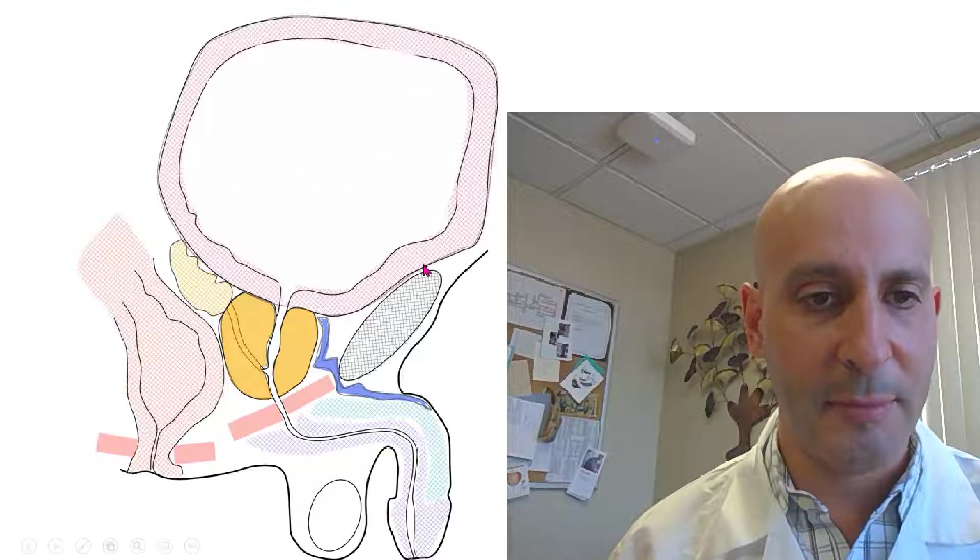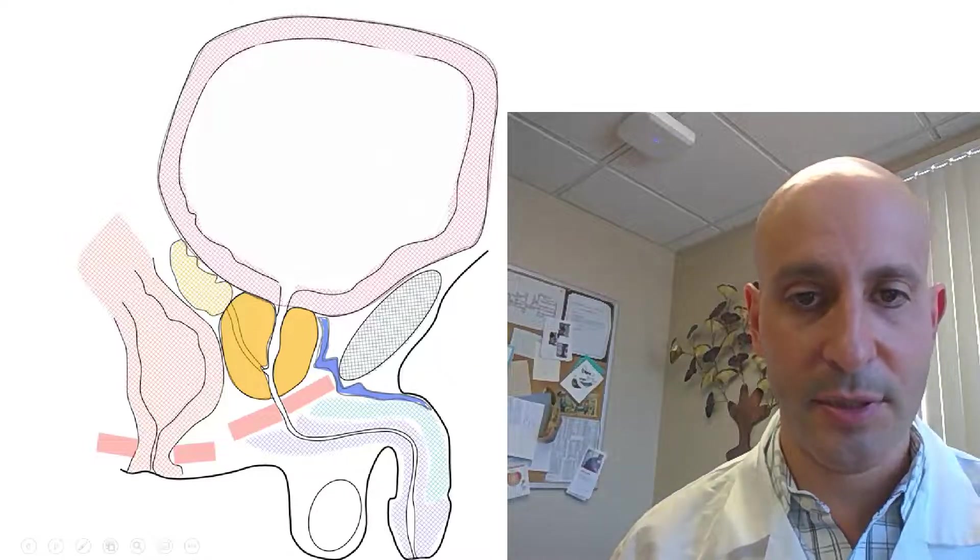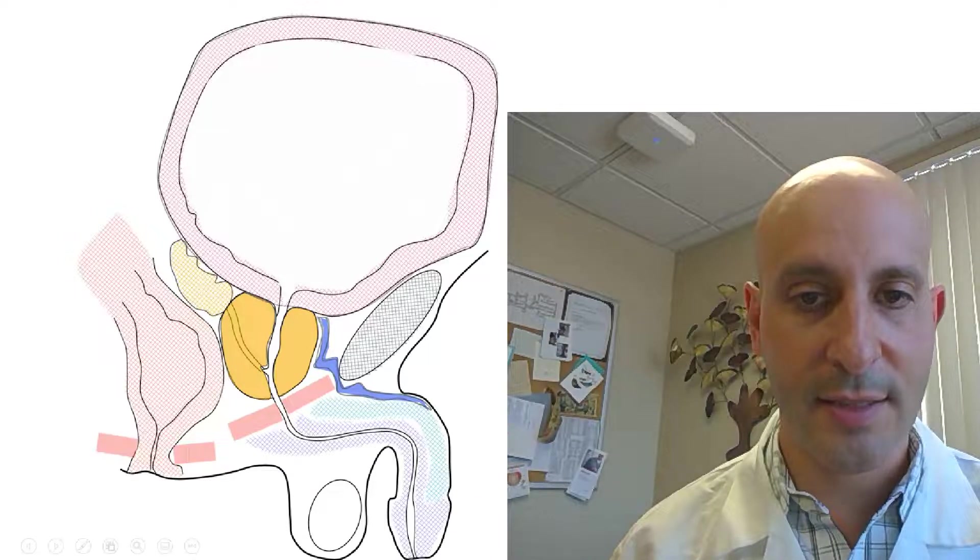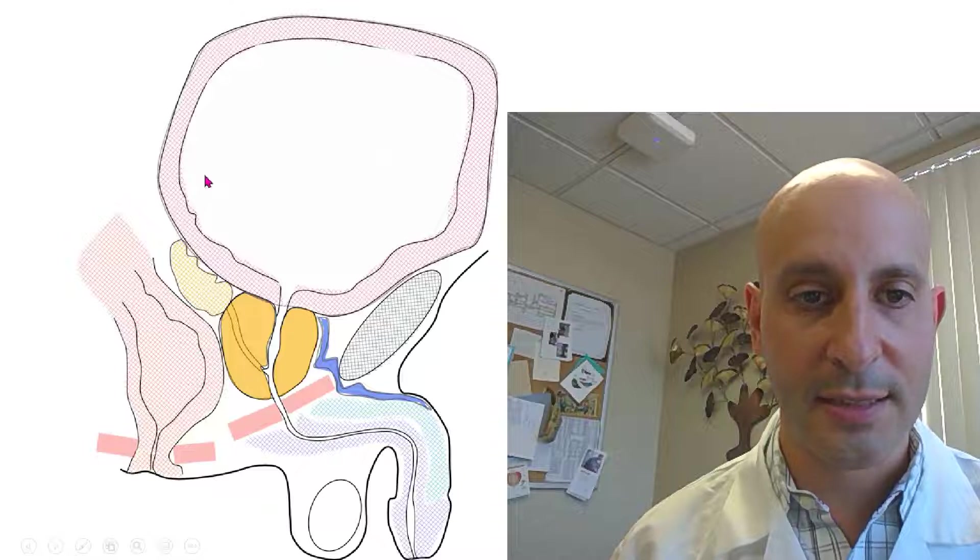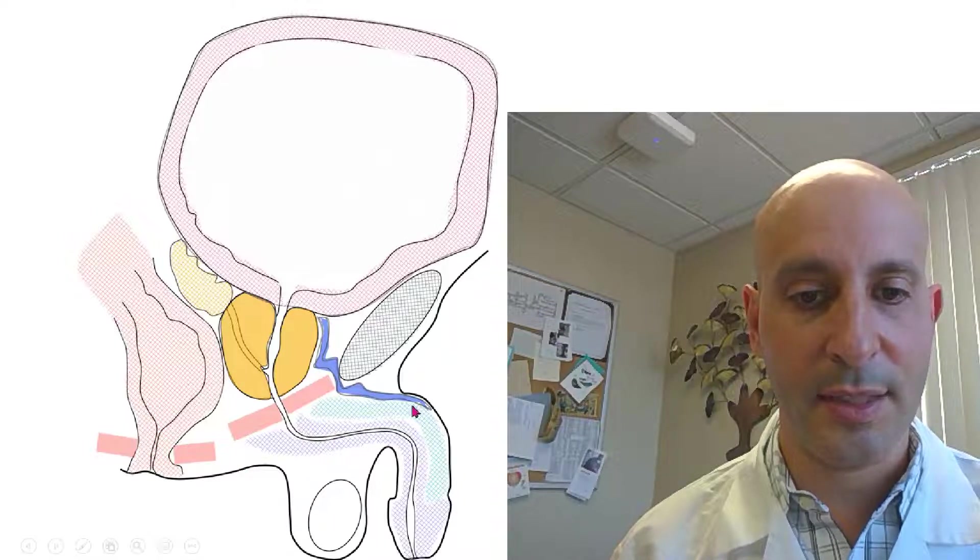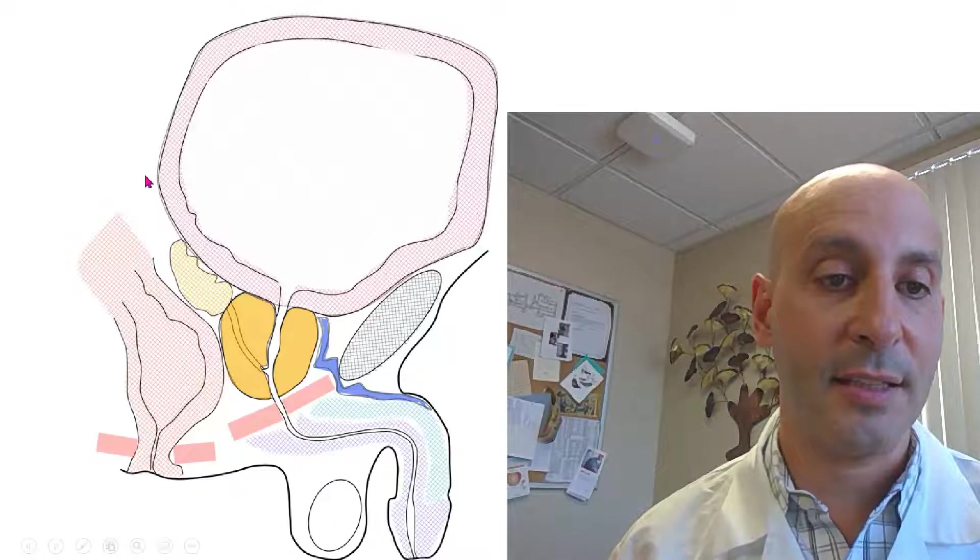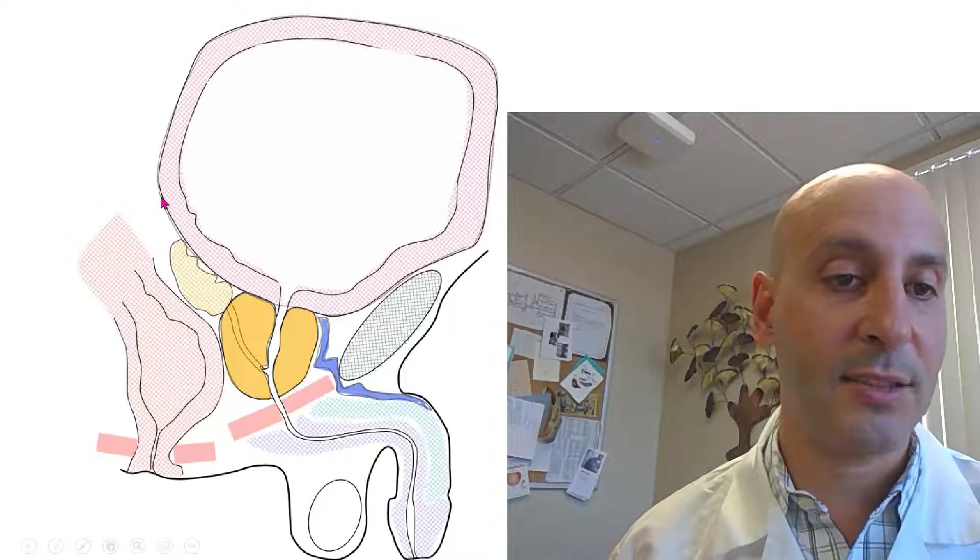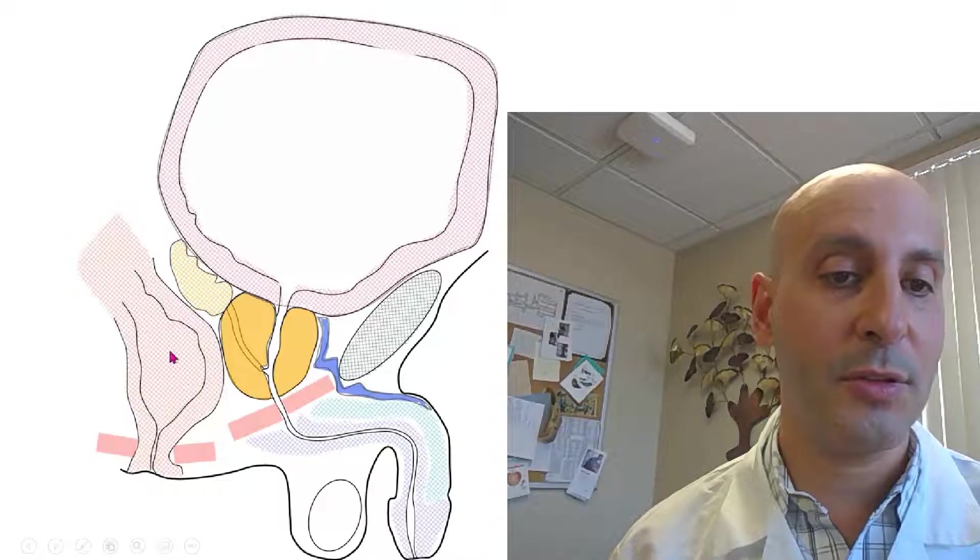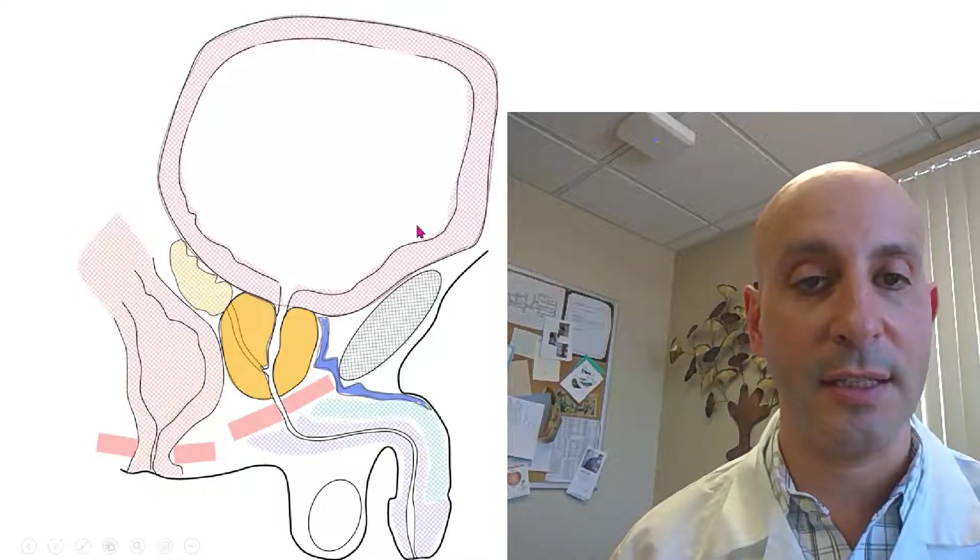So this is anatomy of the urinary tract. The person is facing this way. This is the front, and the body is sliced right down the middle. The way the body is designed, the intestinal tract is towards the back where the stool goes, and the urinary tract is in the front.